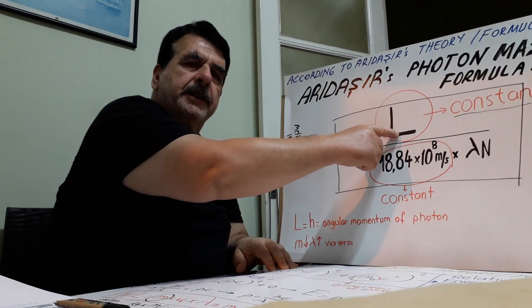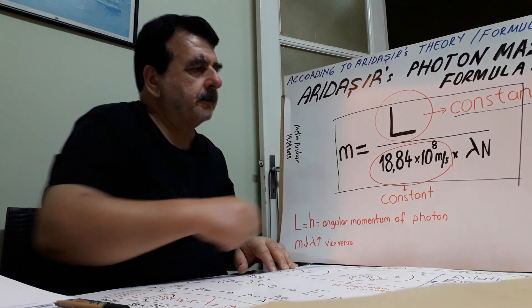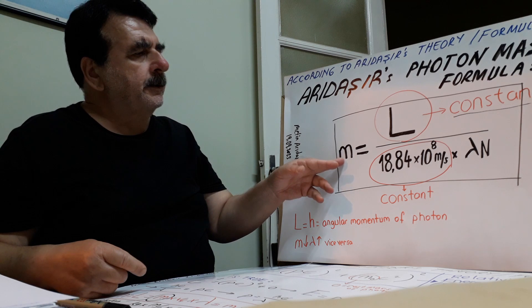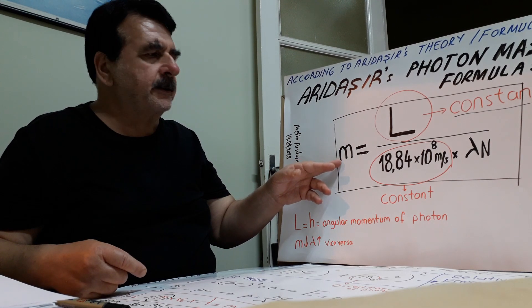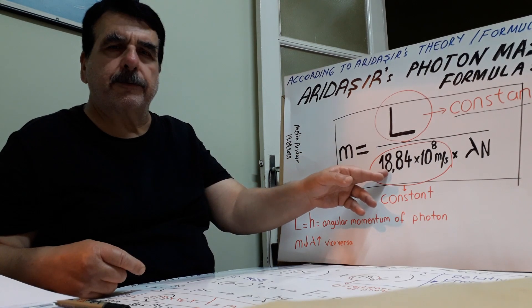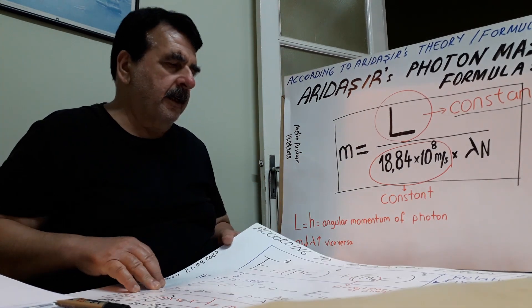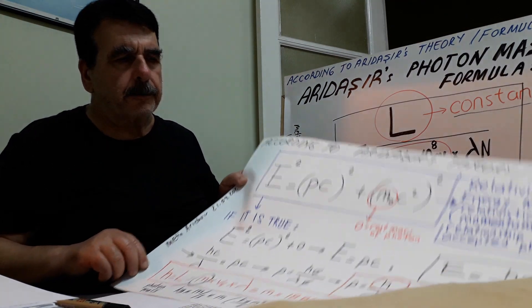This is Planck's constant according to my theory and my formulas. This is linear velocity component mass of photon. This is formula that I put forward. I advise you to watch my former videos if you want.